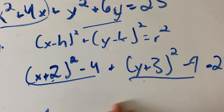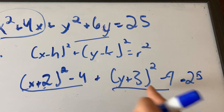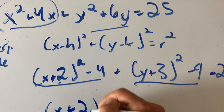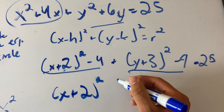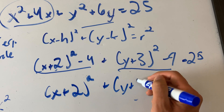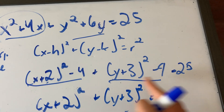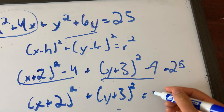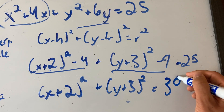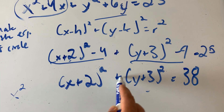Now all you have to do is move these constants over. We're left with X plus 2 squared plus Y plus 3 squared equals 25 plus 4 plus 9, which is 38. And you're done — that's the equation of the circle.